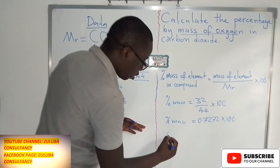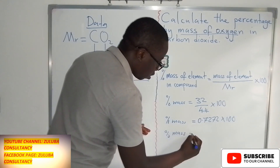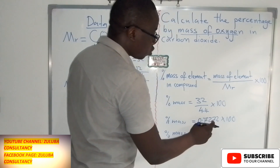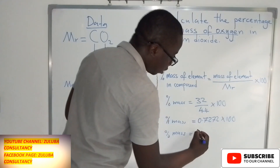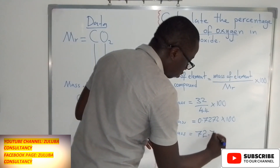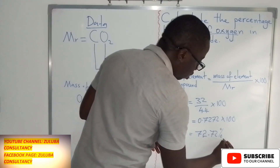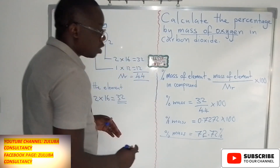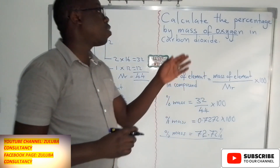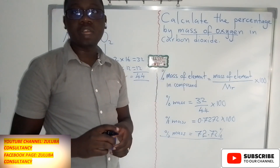So the percentage by mass equals 0.7272 multiplied by 100. This becomes the percentage of oxygen in the compound carbon dioxide.